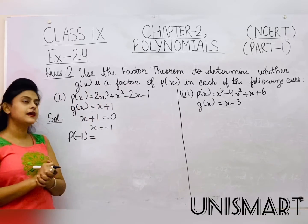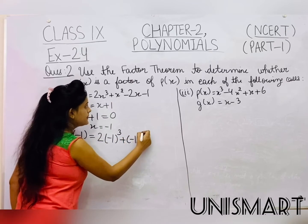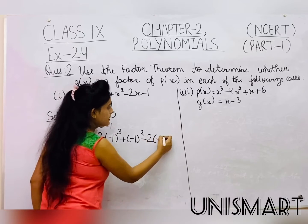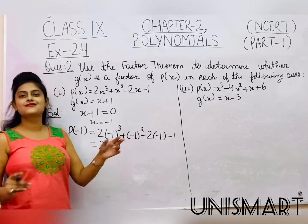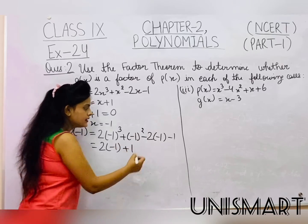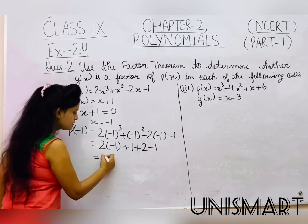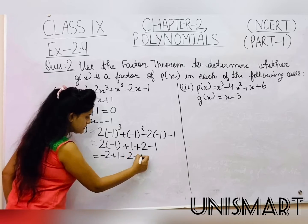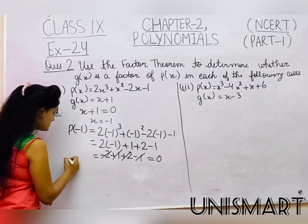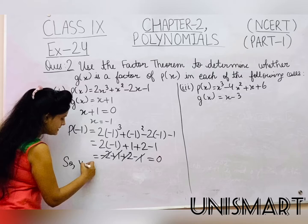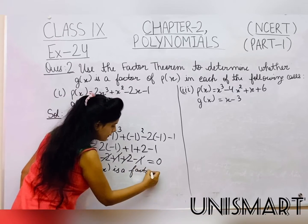We put x = -1 into p(x): 2(-1)³ + (-1)² - 2(-1) - 1. This gives 2×(-1) + 1 + 2 - 1, which equals -2 + 1 + 2 - 1. The +1 and -1 cancel, giving 0. So yes, g(x) is a factor of p(x).